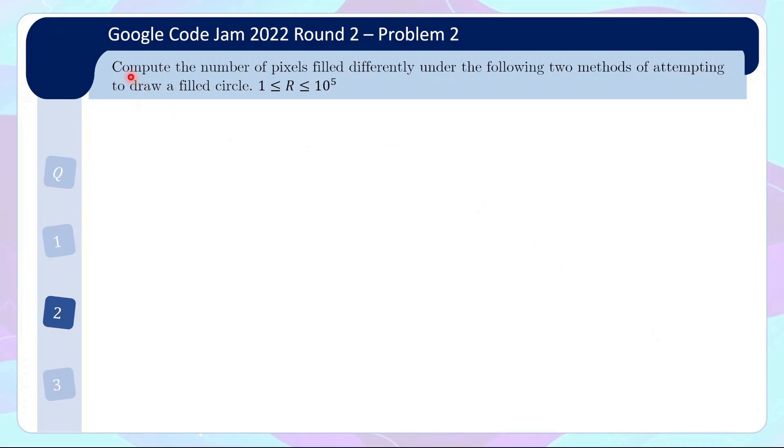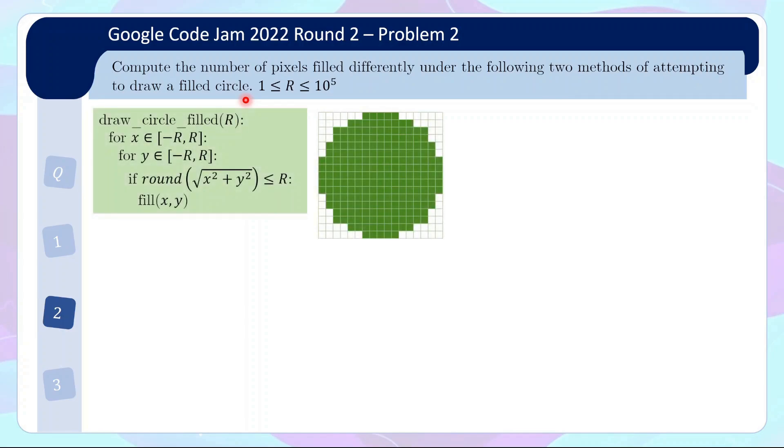For this problem, we are supposed to compute the number of pixels that will be filled differently under the following two methods of attempting to draw a filled circle. So what are the two methods given in the question? First, to give a bit of context, we have an infinite 2D square grid. We designate one of the grid as 0,0 and then the grid to the right of it is 1,0, 2,0, 3,0 and so on. So you basically have a coordinate system labeling of the grid.